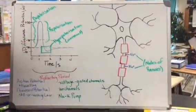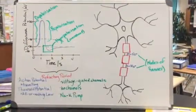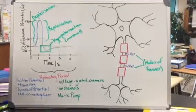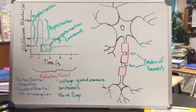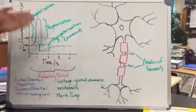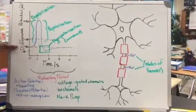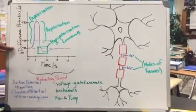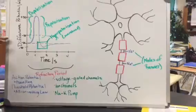This stimulates the opening of potassium voltage-gated channels, causing potassium ions to diffuse out of the cell. This causes repolarization. But it doesn't go back to its resting potential, which is negative 70 millivolts, directly. It actually dips a little lower,